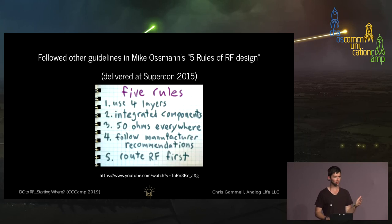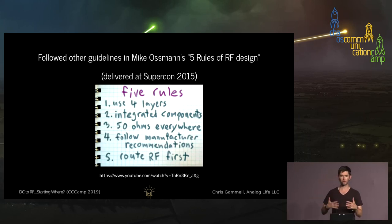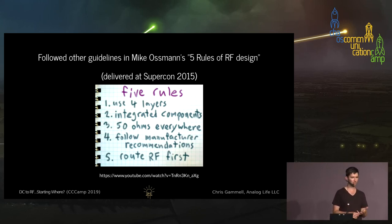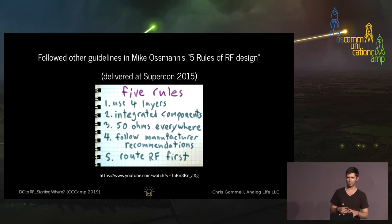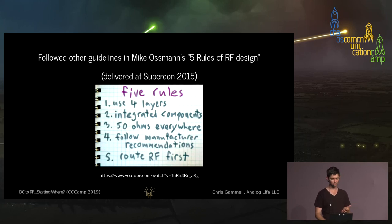There's a great talk by Mike Ossman, who is here at this conference, from 2015 with rules about how to copy an RF circuit. I think of my talk as an extension of that. Some of his rules: use four layers, use integrated components, try to get everything at 50 ohms, follow manufacturer recommendations — effectively copying the example circuits — and route RF first. I think these are all really good rules.